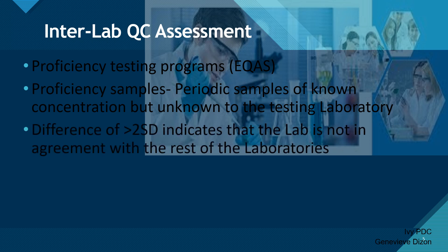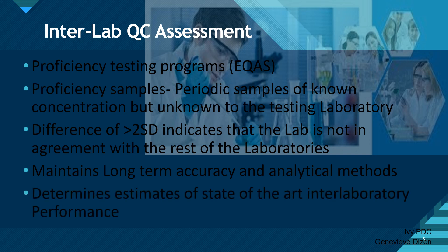A difference of more than 2 SD indicates that the laboratory is not in agreement with the rest of the laboratories. What they also do is compile the results of all laboratories using the same method — they send specimens to many laboratories simultaneously, collect all results, and calculate the agreement of test results. If your laboratory falls outside the reference limit, meaning it does not give the same result as most laboratories, then that also indicates a problem.